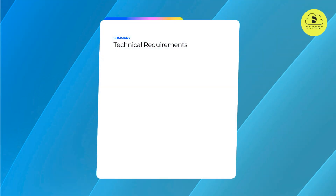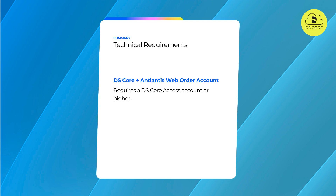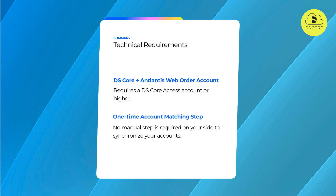Please note, this workflow requires a DSCore access account or higher, and an Atlantis Web Order account, as well as a manual account synchronization step by a Dentsply Sirona customer service agent. When you hand over your first order from DSCore to Atlantis Web Order, a Dentsply Sirona customer service agent will synchronize your DSCore account with your Atlantis Web Order account. This can take up to 24 hours but is only required with your first order. No manual step is required on your side to synchronize the two accounts.